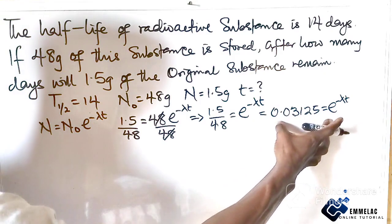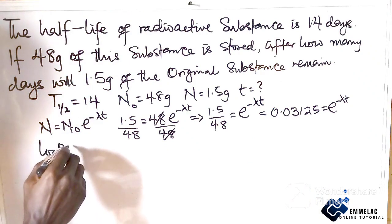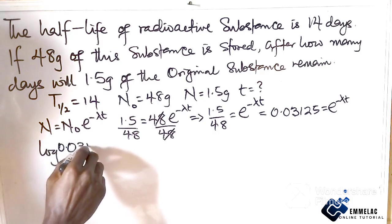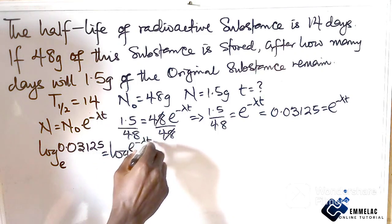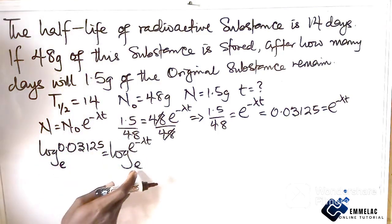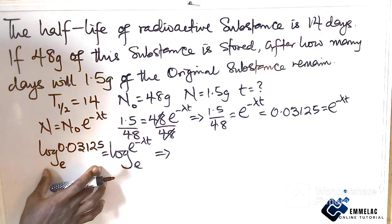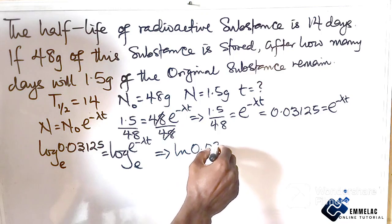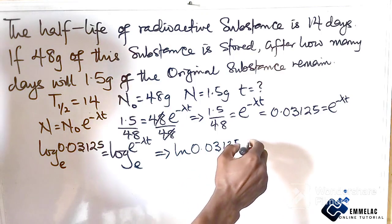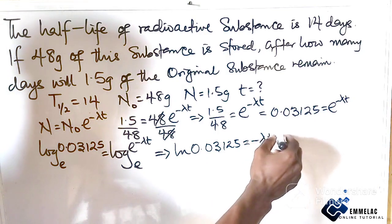Alright, now with this case, let us equate both sides by finding the natural logarithm of both sides. So we can say natural logarithm of 0.03125 equals natural logarithm of e^(-λt). Since these are the same thing, we're applying the logarithm. Now finding this using our calculator.